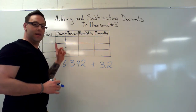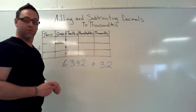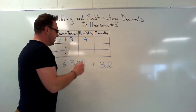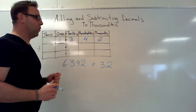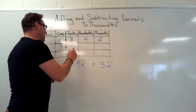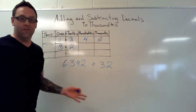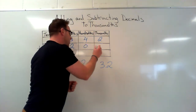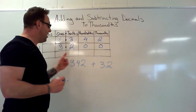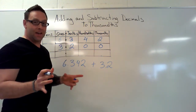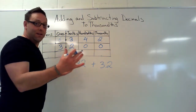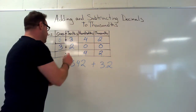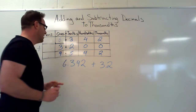Let's take six point three four two and put it into our place value chart: six in the ones, three in the tenths, four in the hundredths, and two in the thousandths. Now let's put three point two in: three in the ones and two in the tenths. We don't have any more numbers — that's okay, because we talked about this in equivalent decimals. We're going to put zeros in there. Three point two is the same as three point two zero zero. Now let's add: two plus zero is two, four plus zero is four, three plus two is five, six plus three is nine.